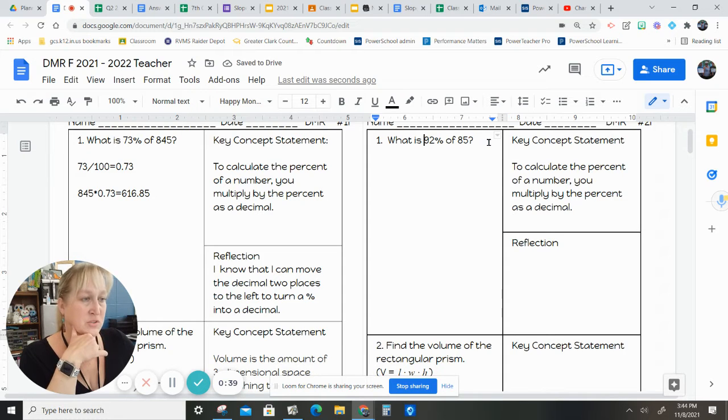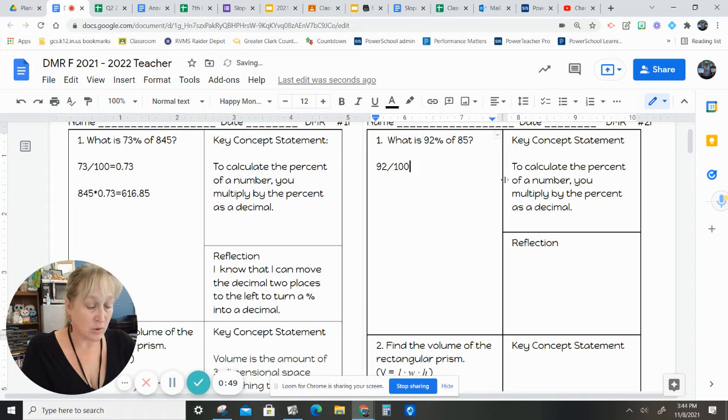So, in order to find 92% of 85, there's two options. You're going to make sure that you know that 92% is the same as 92 divided by 100, which equals 0.92. You will then do 85 multiplied by 0.92 on your calculator and you will get your answer if you know what 0.92 is.